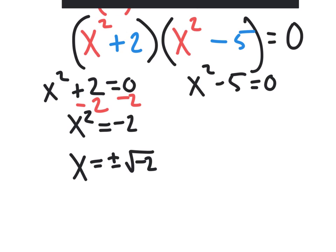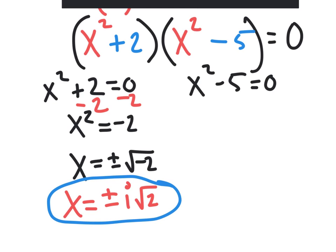Now we know that the square root of any negative number ends up being an i. So you really have x equals plus or minus i square root of positive 2. And the square root of positive 2, you cannot simplify it. So here are two answers to our original equation.